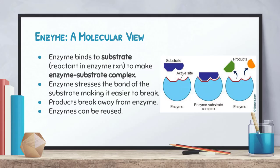So how does an enzyme actually work? An enzyme binds to the substrate — that's the term used to describe a reactant in a reaction that involves an enzyme, so reactant and substrate essentially mean the same thing. When it chemically bonds to the active site, it forms what's called the enzyme-substrate complex. The enzyme stresses the chemical bond of the substrate, making it easier to break. The product then breaks away from the enzyme, and the enzyme can be reused over and over again. The enzyme's active site is very specific and will only bind to one type of substrate.